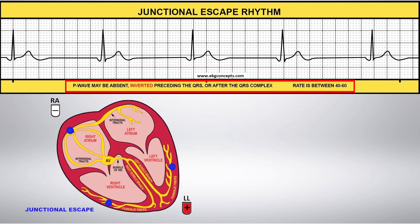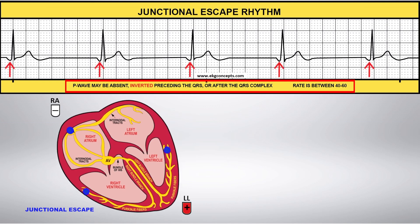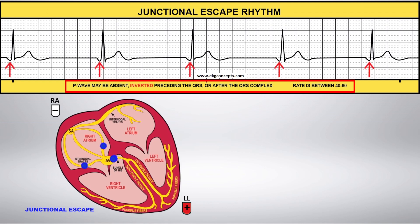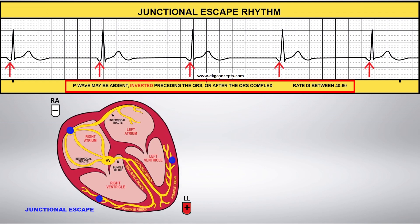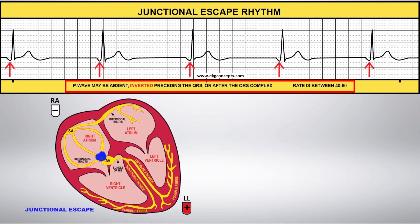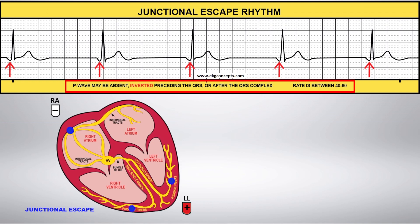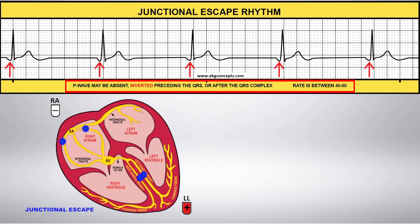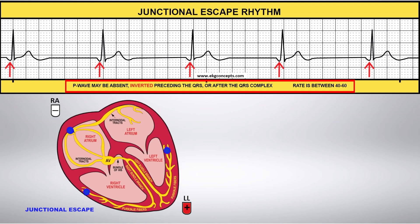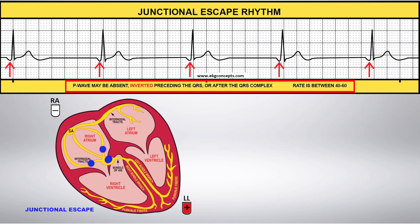Since the impulse originates from the AV node, it travels backward toward the atria and toward the negative lead, which causes the P wave to be inverted, as illustrated by the red arrows.